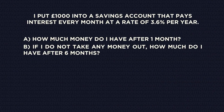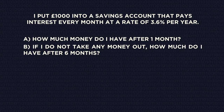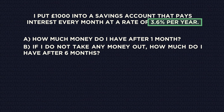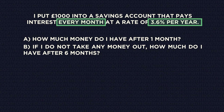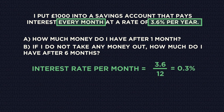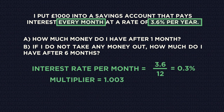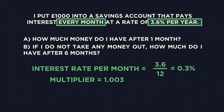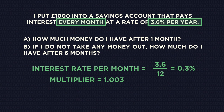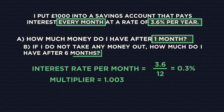Here's another one. The rate is 3.6% per year. So to get the rate per month, we need to divide by 12. As it's a percentage increase, the multiplier is 1.003. We can now work out how much I have after one month and six months. Pause the video and give it a go.